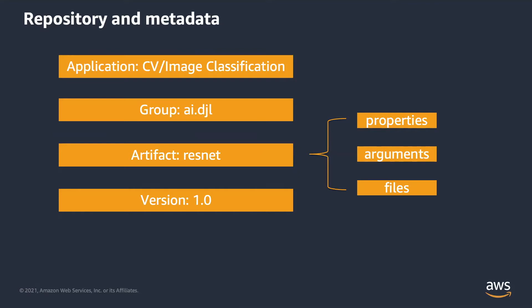In order to better organize models, DJL stores models in a hierarchical structure. Each model's metadata is stored in a DJL repository, and this metadata will be used when DJL searches for a model. Applications describe what the model is about. GroupID is used for identifying the publisher, and artifactID defines the family of the model.